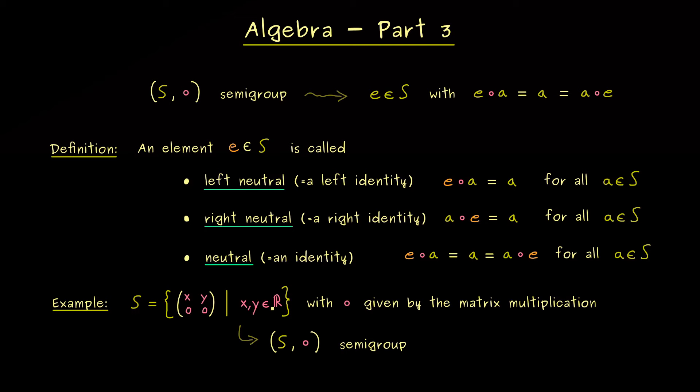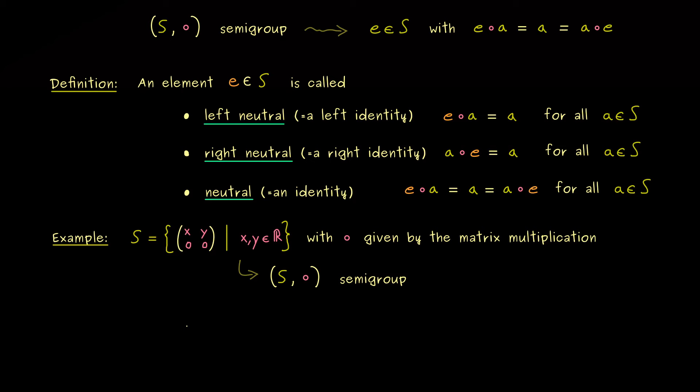And then I can immediately tell you that we have a left identity here. And this is (1 0; 0 0) and we apply this matrix from the left now. Therefore we take an arbitrary element from our set S. And now we just do the usual matrix product. Which means we have x here, 0 there and y here and 0 there. So we see we get the same element out again. This implies this matrix here is our element E and it's a left neutral one.